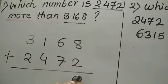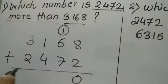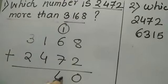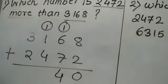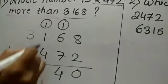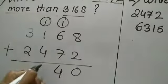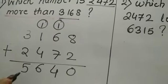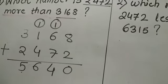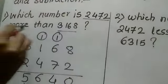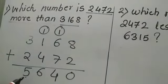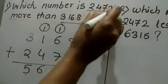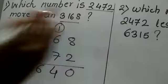8 plus 2 is 10. I write here 0 and carry over 1 to the next place. 6 plus 7 is 13, plus 1 is 14. I write here 4 and carry over 1 to the next place. 1 plus 4 is 5, plus 1 is 6. And 3 plus 2 is 5. So the answer is 5640. The number 5640 is 2472 more than 3168.